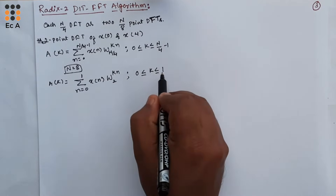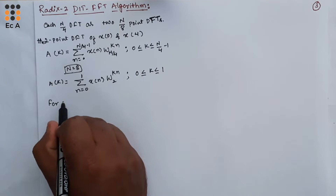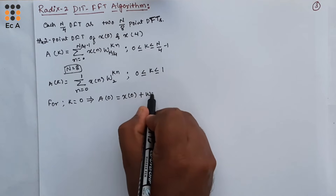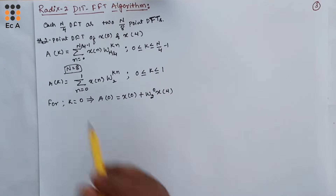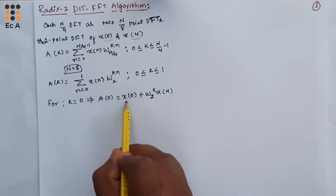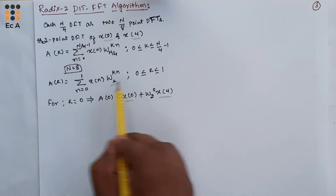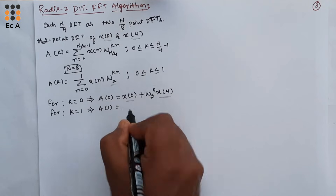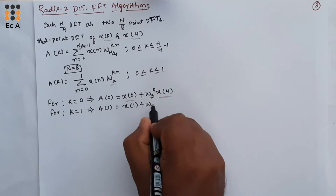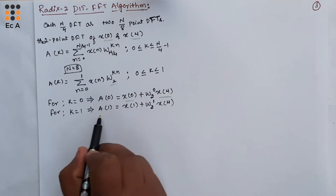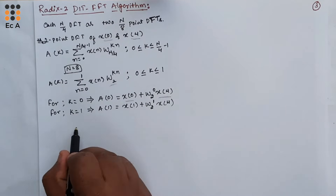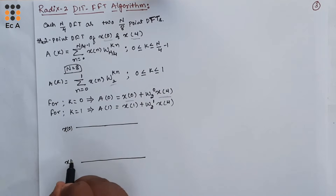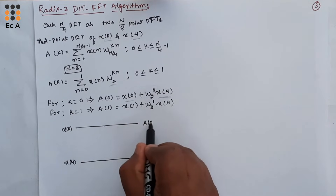Since k ranges from 0 to 1, for k equal to 0, A(0) equals x(0) plus W_2^0 times x(4). Since we are considering only two terms x(0) and x(4), this is the first term and this is the second term with the twiddle factor. For k equal to 1, A(1) equals x(0) plus W_2^1 times x(4).